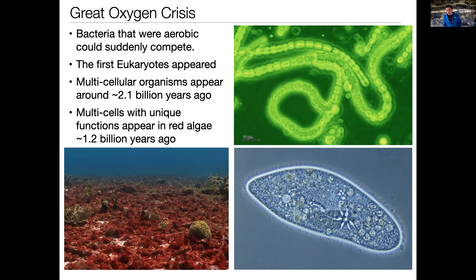Multicellular organisms — eukaryotes are the tree where you have multicellular organisms like you and I — appeared about 2.1 billion years ago. The very first multicellular organisms that appeared were all duplicates of each other, like your skin cells: a gigantic multicellular complex but they're all the same. It wasn't until about 1.2 billion years ago when red algae appeared that multicellular organisms had different cells with different purposes in the organism. So multicellular life started soon after the eukaryotes gained dominance after the Great Oxygen Crisis, but it took another billion years before they discovered it's useful to have different kinds of cells doing different kinds of things together.